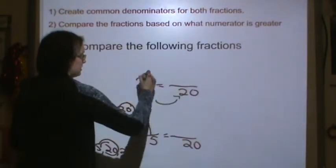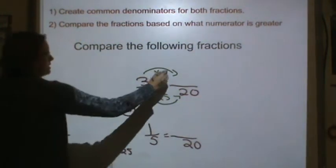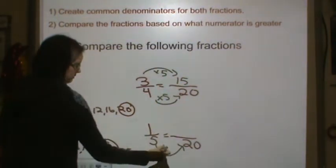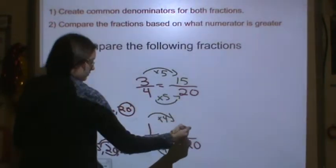So 4 times 5 is 20, so 3 times 5 is 15. 5 times 4 is 20, so 1 times 4 is 4. Now I can compare these.